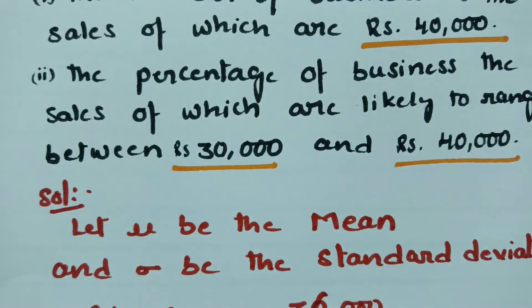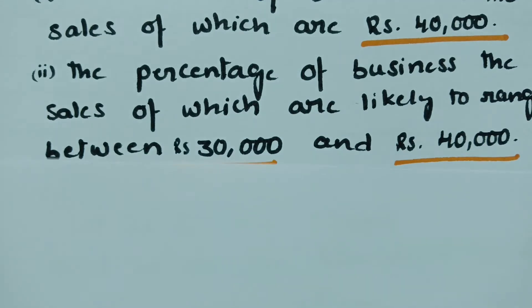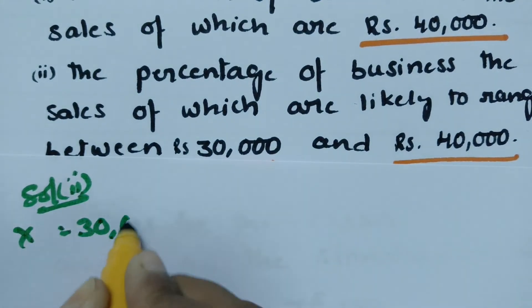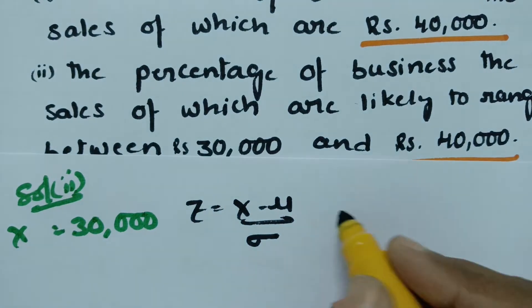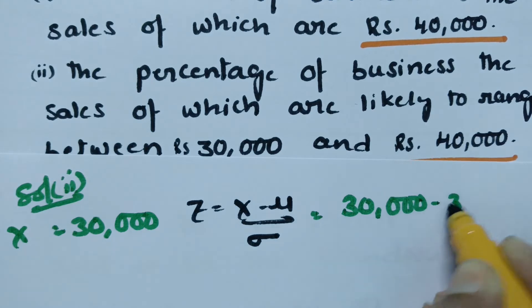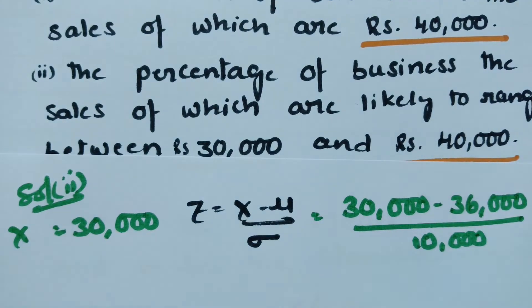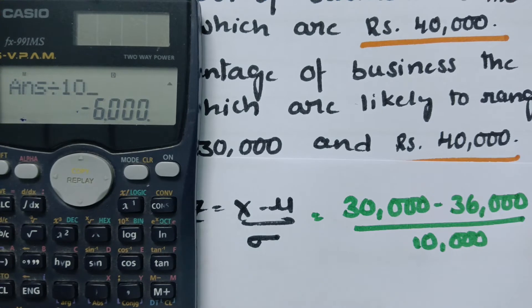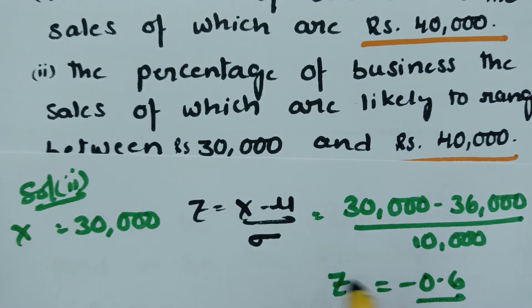For the second question, we find the percentage of businesses with sales between 30,000 and 40,000. For x = 30,000, the z variate is z = (30,000 - 36,000) / 10,000 = -0.6. So the z value for x = 30,000 is minus 0.6.